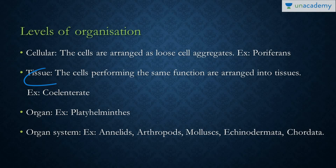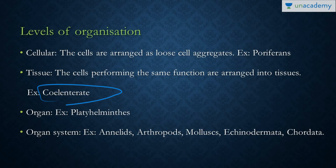The next level is the tissue level of organization. Here the cells are arranged in the form of tissues. The example of these are cnidarians. Cnidarians broadly consist of jellyfish and other polyps, and basically corals. These are the parts of the cnidarians.